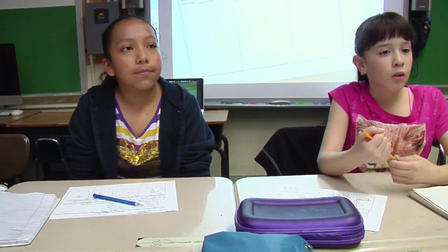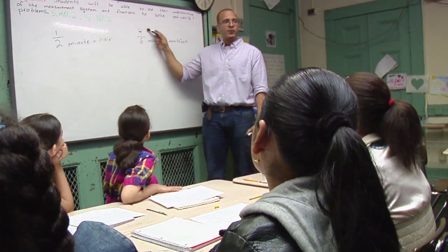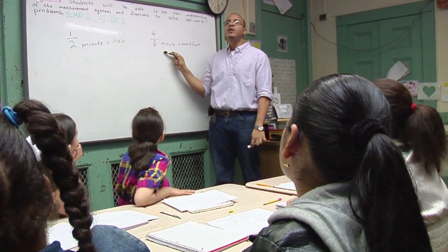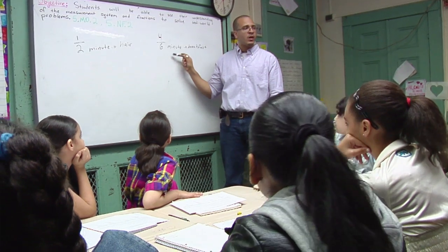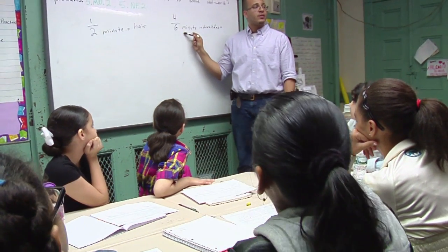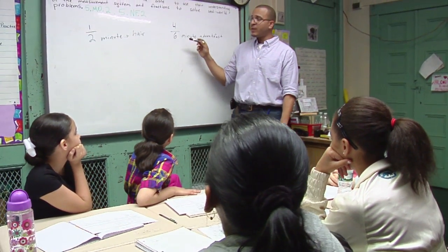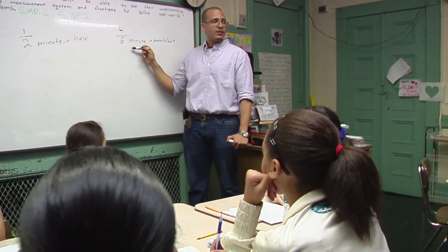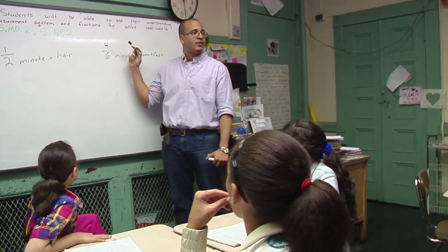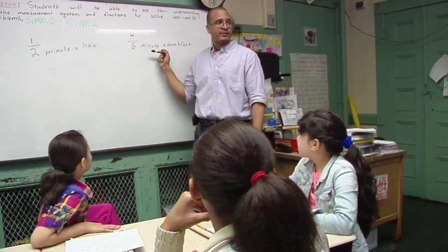So what Gabi knows is this represents one half. She knows that 4/6 is greater than half because what is half of 6? 3. But do we have 3 parts of that 6? No. We have 4/6, so we have more than that half.